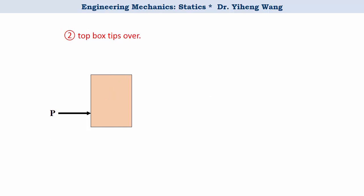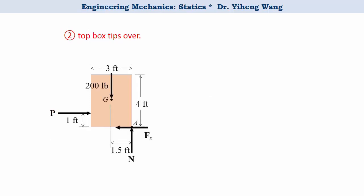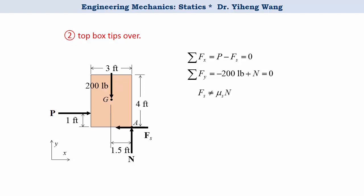For the second situation — top box tips over — we again sketch the free body diagram of the top box. Now the location of the normal force N is important: for tipping over, the normal force must be placed at the edge of the box, which is 1.5 feet from the center. The two force equilibrium equations are less useful here because Fs does not necessarily equal mu_s · N at tipping. The more useful equation is moment equilibrium about point A: −P·(1 ft) + 200 lbs·(1.5 ft) = 0, giving P = 300 pounds.